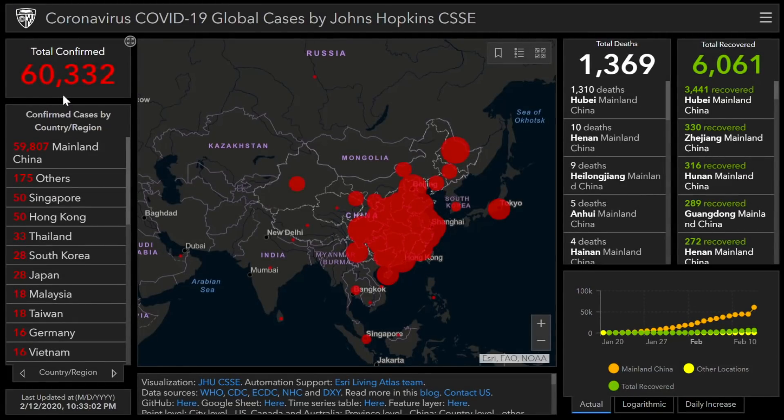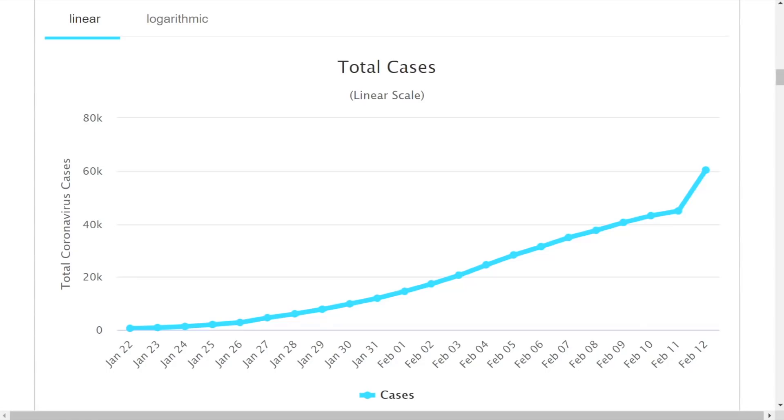60,000 now total confirmed cases, 1,369 total deaths, total recovered is 6,061—about four times the number of deaths have totally recovered. Here's the Worldometer website showing a huge jump in cases.